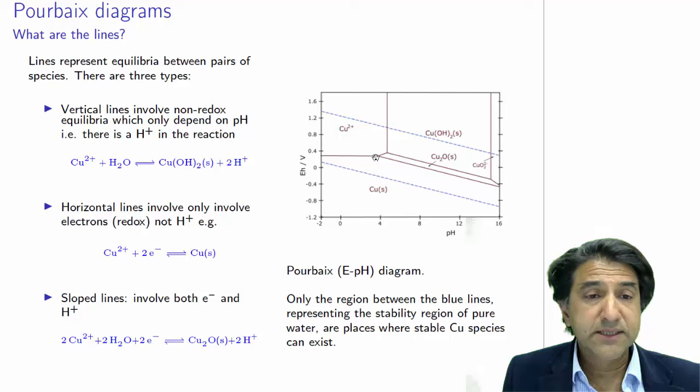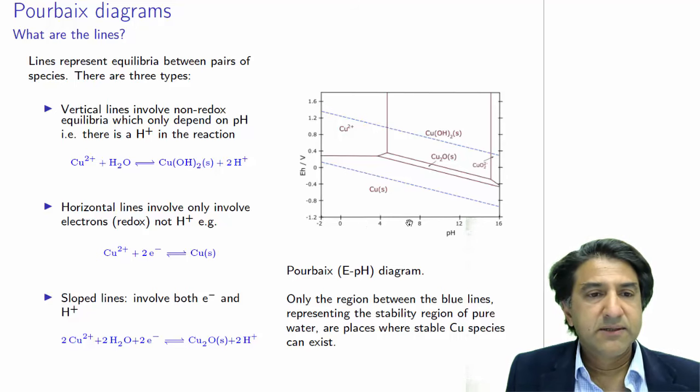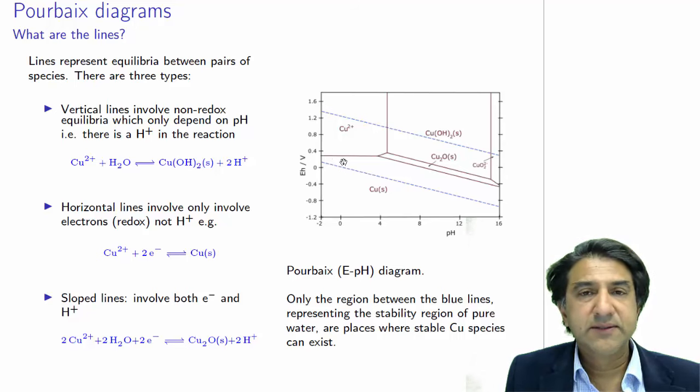Now, here's a horizontal line, exactly the opposite. This occurs at a particular voltage, but at a range of pHs. And that's the equilibrium between Cu2+ and Cu solid. So pretty clearly, if we add acid to that particular equilibrium, it won't make any difference. It doesn't involve hydrogen ions or OH ions. And indeed, if we look at this classic reaction, it's just the usual half reaction, Cu2+ plus two electrons go to Cu solid. There are no hydrogen ions appearing in this equation. And that is why it occurs at a particular voltage.